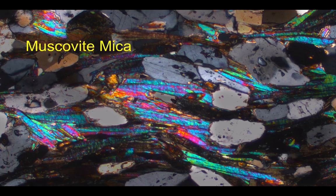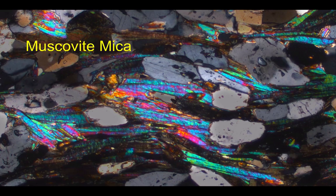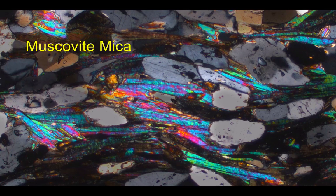Muscovite mica, on the other hand, does share the appearance of biotite in terms of its crystal form. We see again the flakes and the basal cleavage. The colours of muscovite, as you can see, are much brighter, as in this case from a schist from the Scottish Highlands.